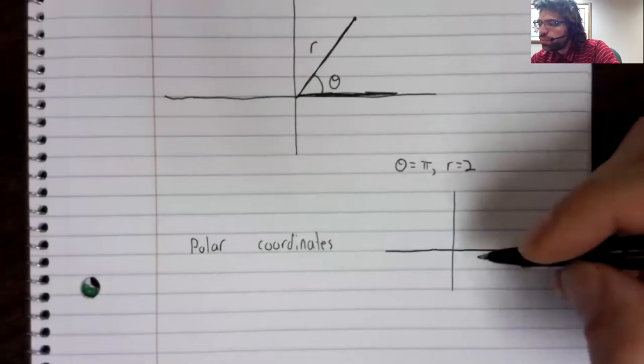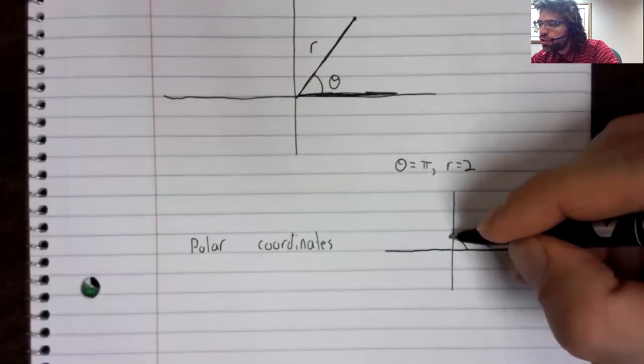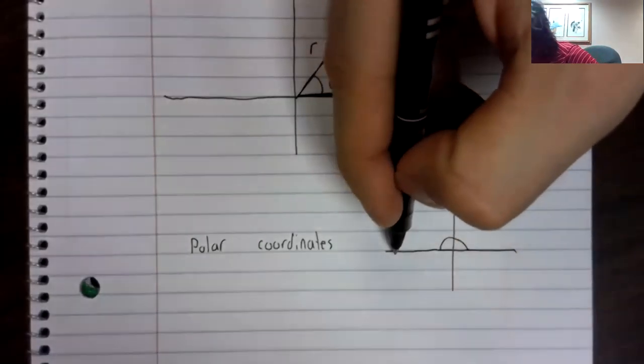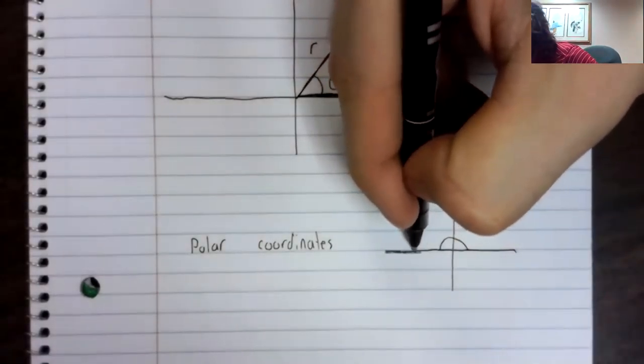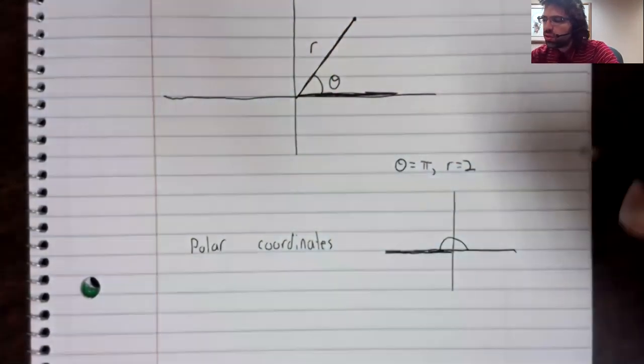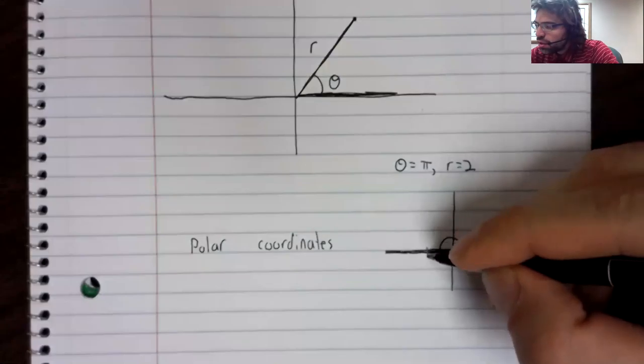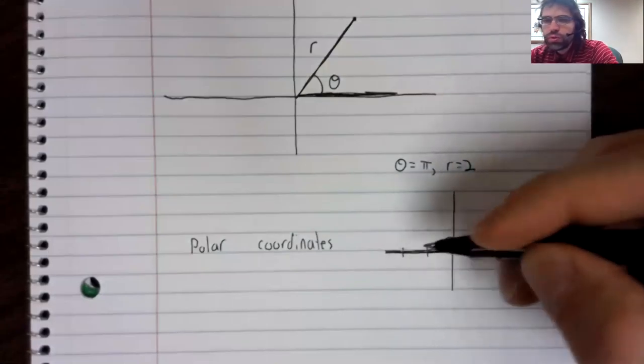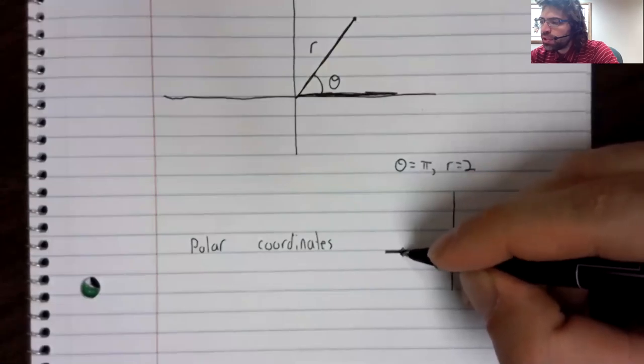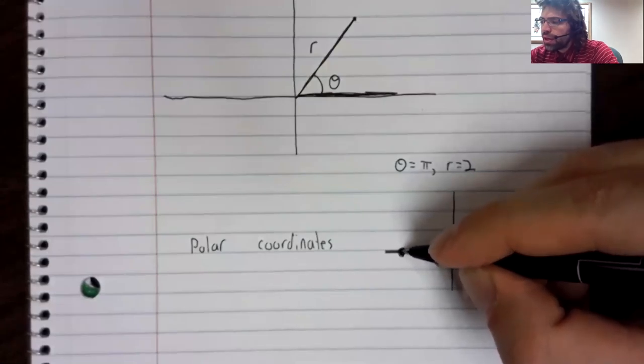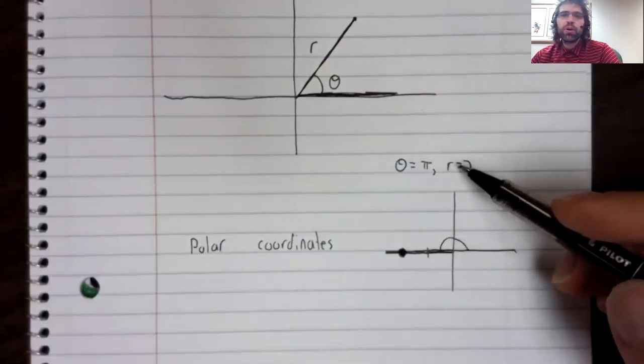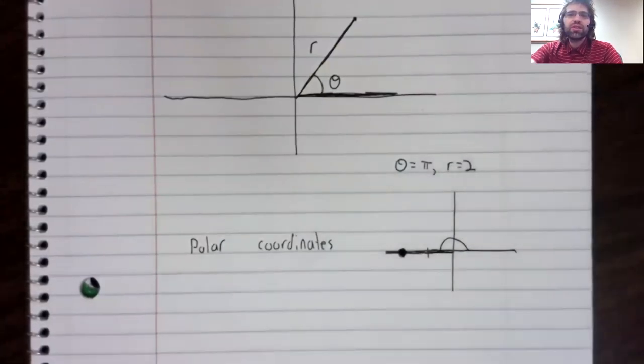Pi is 180 degrees, so the line segment is this. And you go two units down the line segment. And here is the point corresponding to this data.